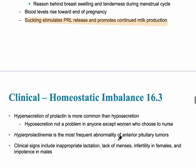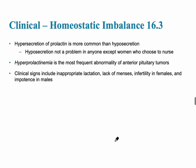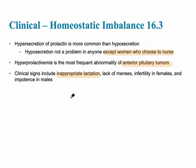For homeostatic imbalances of prolactin, hyposecretion is really only a problem for women who choose to nurse. Hypersecretion could be due to an abnormality such as an anterior pituitary tumor — the pituitary keeps producing more and more prolactin. This can result in inappropriate lactation, lack of menses, and infertility in females, or impotence in males.